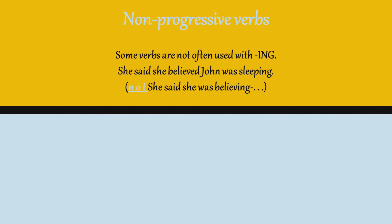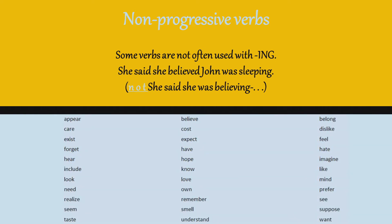Be careful with non-progressive verbs. Some verbs are not often used with -ing. For example: she said she believed John was sleeping. Believe is a non-progressive verb — you can't use it with -ing, not even in past continuous or present continuous. You don't say she was believing. Unfortunately you have to remember these verbs and practice a lot, but don't worry — just remember that these verbs, and there are a few more, you don't use with -ing.